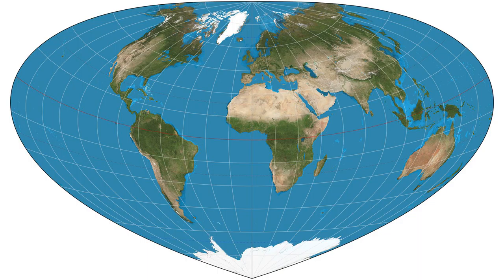On the central meridian, shapes are not distorted, but elsewhere they are. Different projections can be produced by altering the eccentricity of the arcs, making it vary between the sinusoidal projection and the Werner projection.